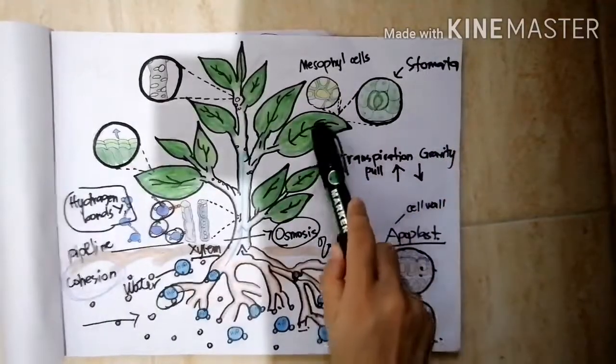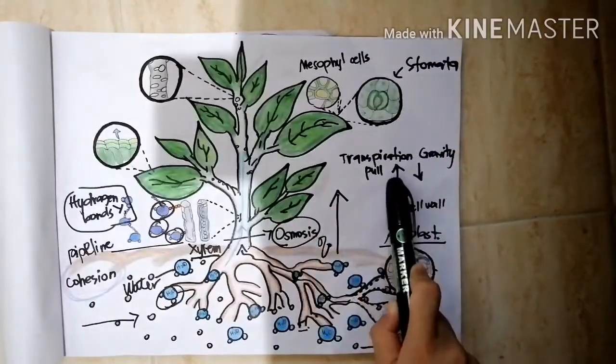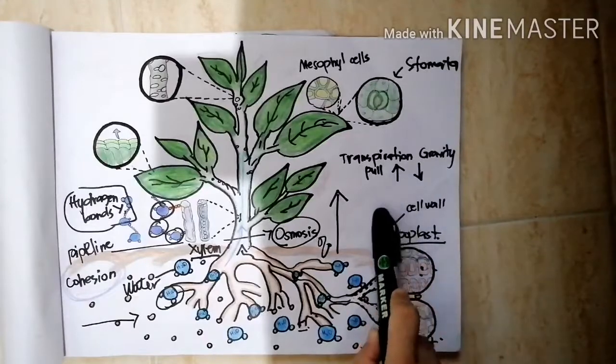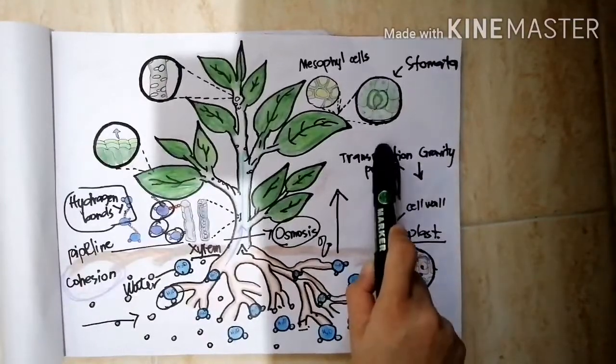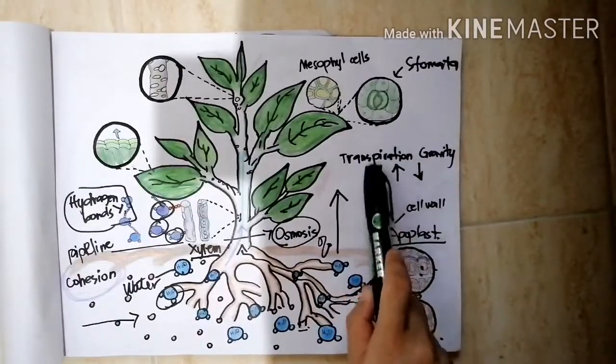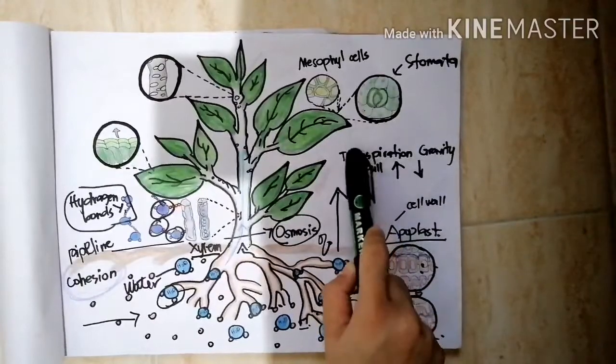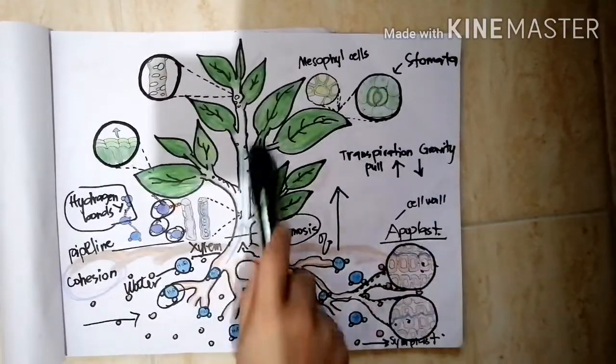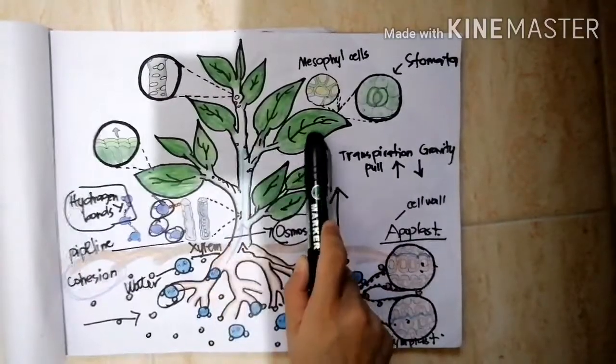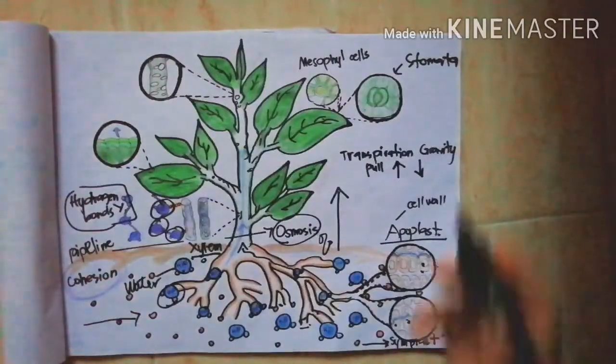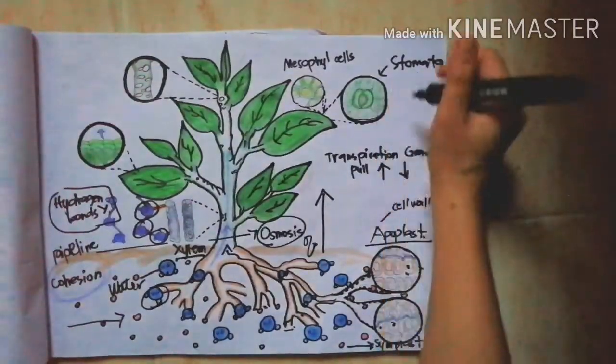As each water molecule escapes from the leaves, it pulls a column of water molecules upward. Thus, the plant's xylem uses the movement of evaporating molecules' cohesion and adhesion to draw water from its roots upwards to its leaves.